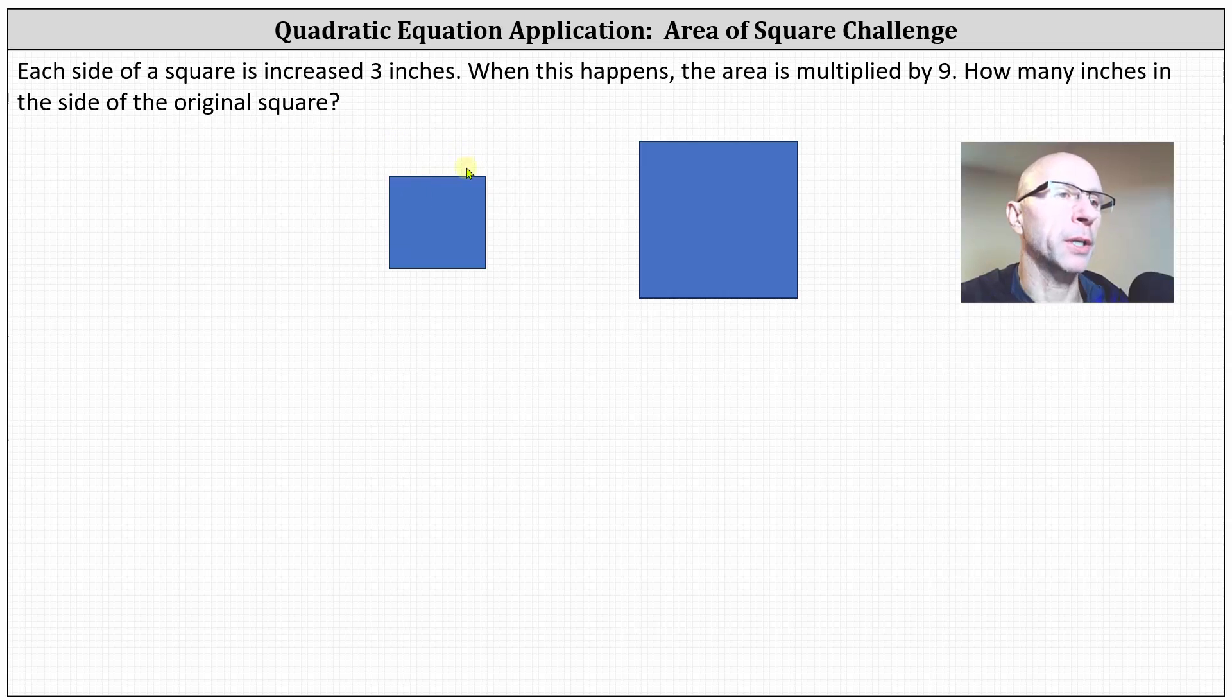Let's go ahead and model this information. Let's set the original square here on the left be an x by x square. And then if each side is increased by three, the enlarged square is an x plus three by x plus three square.